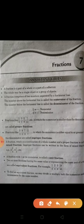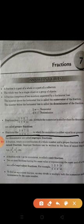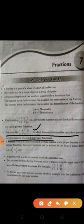Fractions like 3 upon 3, 8 upon 5, 7 upon 3, 11 upon 7, in which the numerator is either equal to or greater than the denominator, are called improper fractions. If the numerator is greater than the denominator, then these types of fractions are called improper fractions.